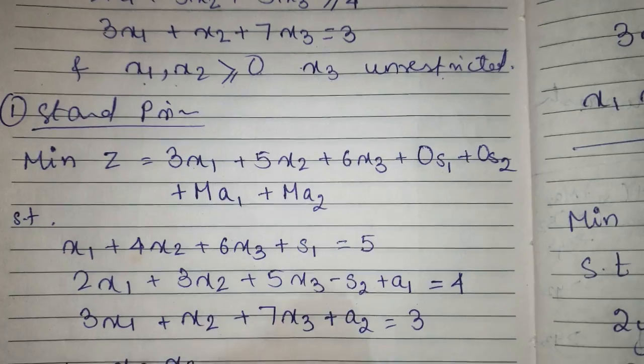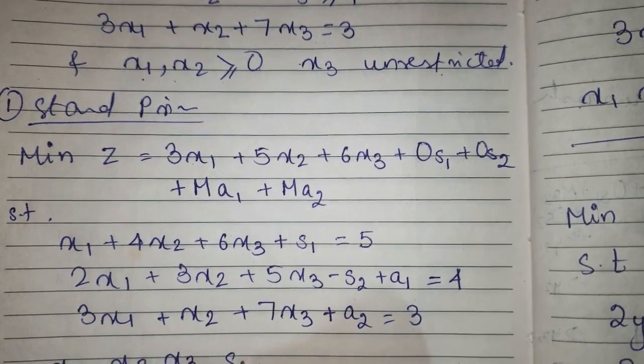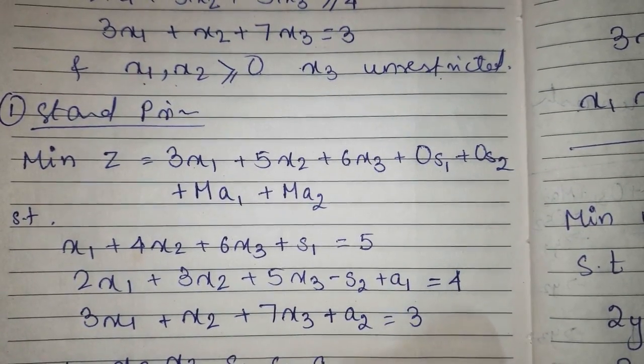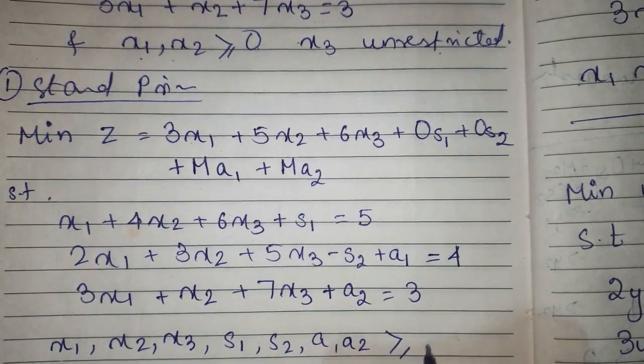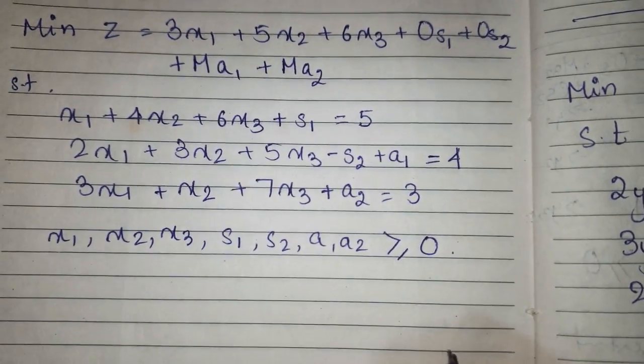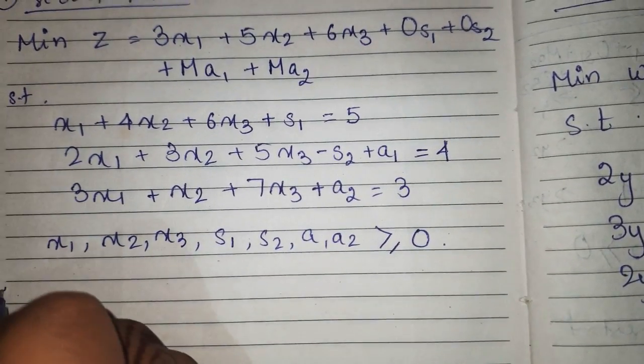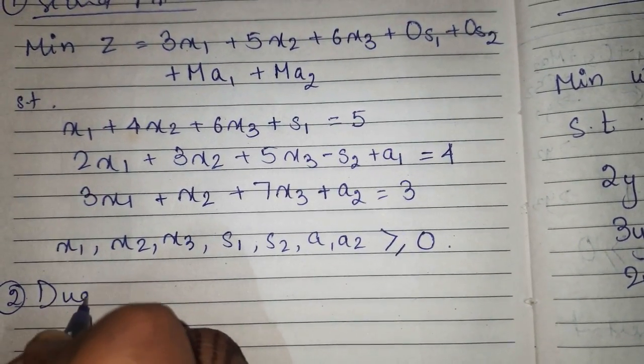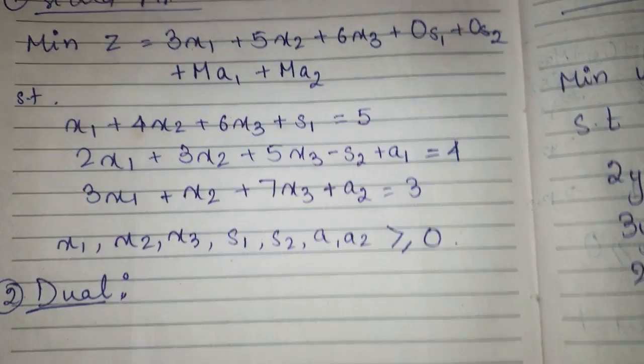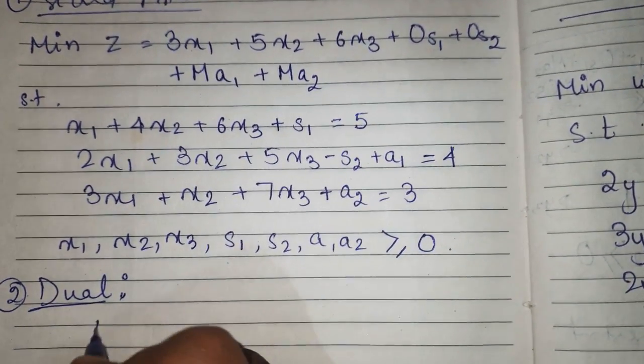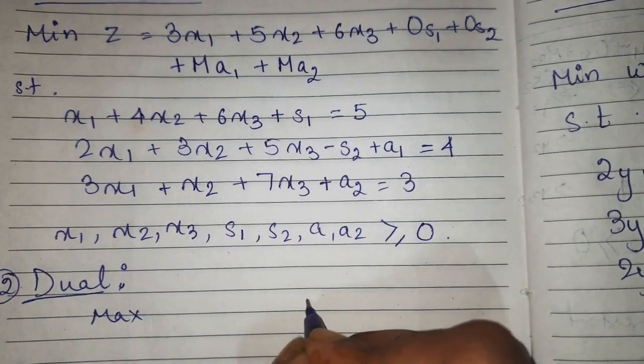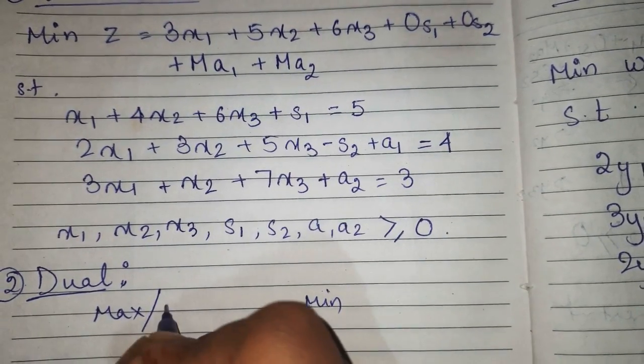The non-negativity constraint is x1, x2, x3, s1, s2, a1, a2 all are greater than or equal to 0. Now from standard primal form we will derive the dual form. The derivation rules are: if the function is maximization then it will become minimization, if it is minimization then it will become maximization.